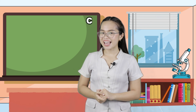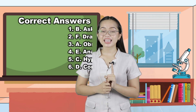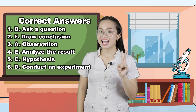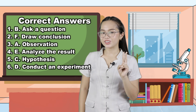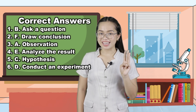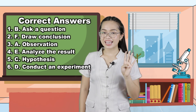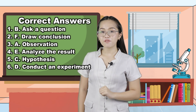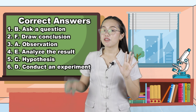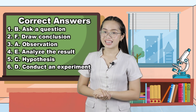Let's check your answers. Number 1, the answer is B — ask a question. Number 2, the answer is F — draw conclusion. Number 3, the answer is letter A — observation. For number 4, the answer is E — analyze results. Number 5, the answer is C — hypothesis. And for number 6, the answer is D — conduct an experiment.